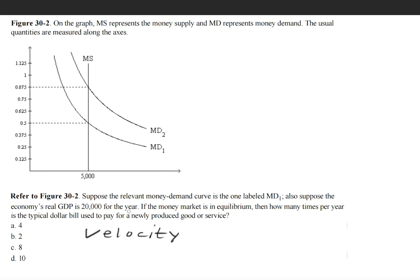And velocity is just how many times that the money is changing hands. So my dollar bill goes to this person, which goes to that person, which goes to that person.